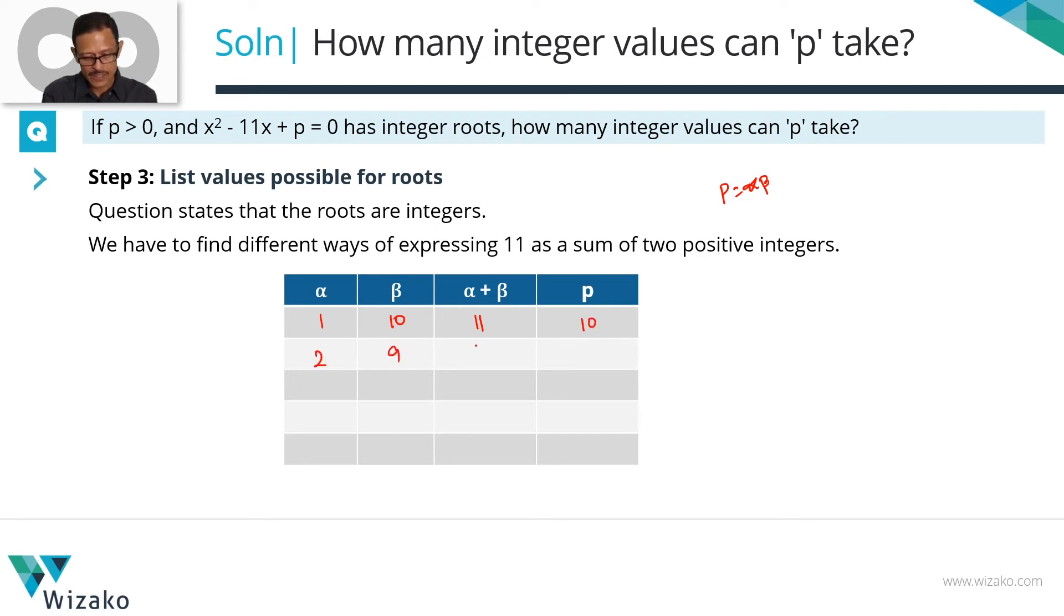The second possibility is 2 and 9. Sum continues to be 11, product is equal to 18. Third one is 3 and 8. Sum is equal to 11, product is equal to 24.